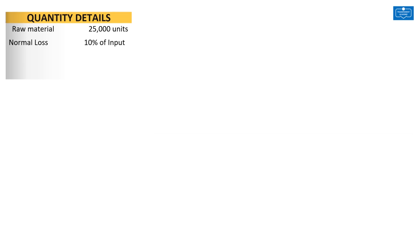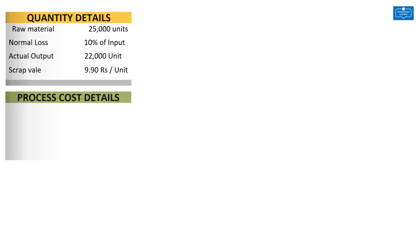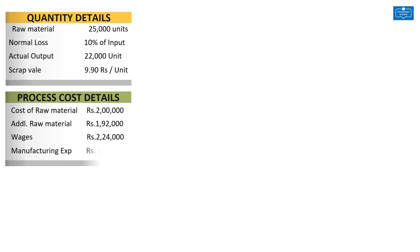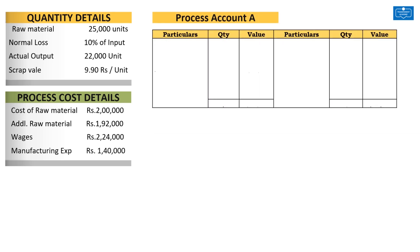Before we prepare the Process A account, let's first list down all the important particulars relevant for preparing the process account. Raw material introduced into the process is 25,000 units. Normal loss is 10% of input. Actual output is 22,000 units. Scrap value is Rs. 9.90 per unit. The cost particulars are: basic raw material Rs. 2,00,000, additional raw material Rs. 1,92,000, wages Rs. 2,24,000, and manufacturing expenses Rs. 1,40,000. In a process account which involves process loss, it is always advisable to tally the quantity column first and then move on to tally the values.